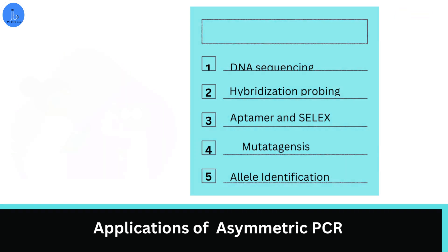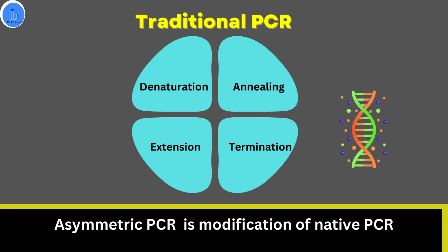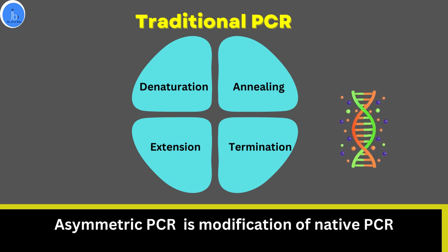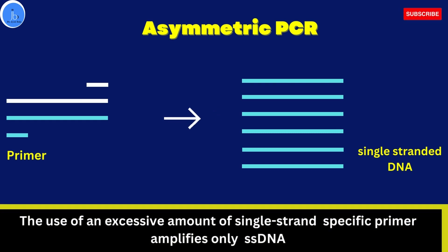This asymmetrical PCR is a modification of your traditional native PCR. In conventional PCR, which is a thermocycler process used to amplify DNA routinely in the lab, biotech, biopharma, and R&D sectors, there are crucial steps like denaturation, annealing, amplification, extension, and termination. This conventional PCR amplifies double-stranded DNA, but in asymmetrical PCR we amplify only a single-stranded template.